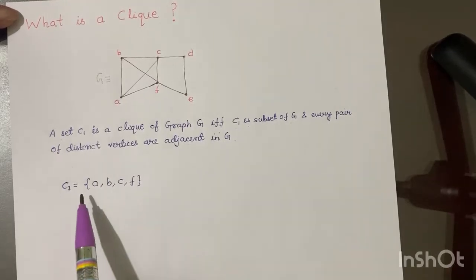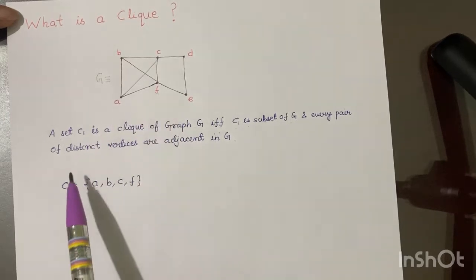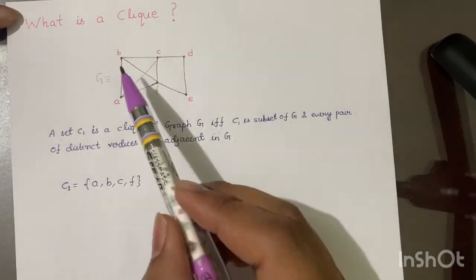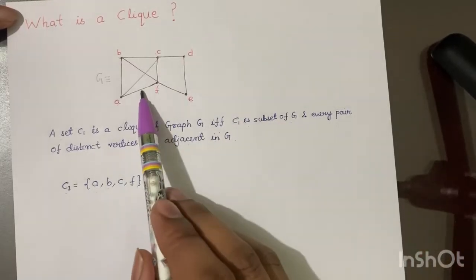So let's say I write a set with four vertices which is a subset of graph G. So C1 is A, B, C, and F. So you can see it's A, B, C, and F. It will be a clique of graph G.